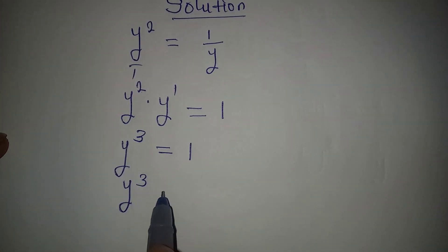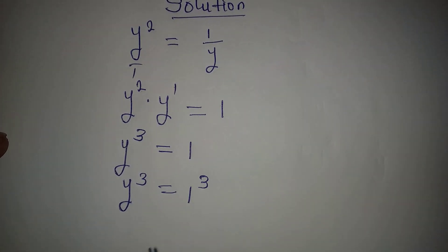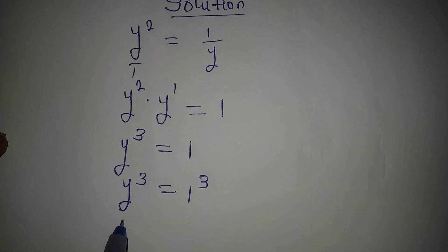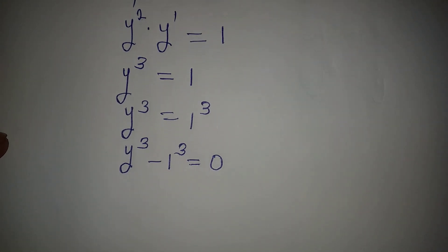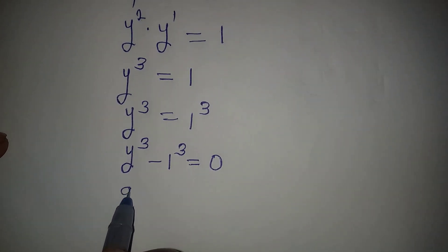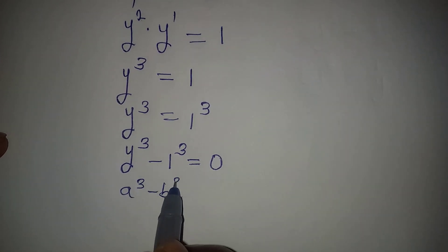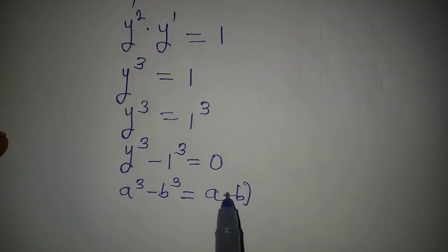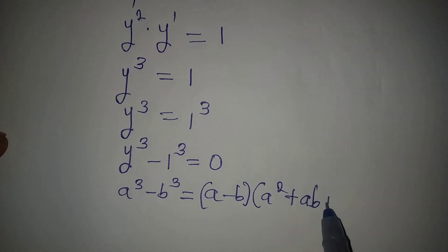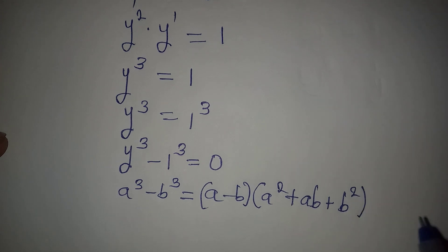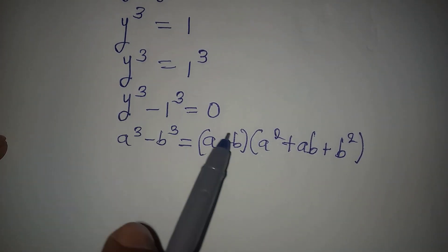So we're going to have y to the power of 3 equal to 1 to the power of 3, which is the same as 1. Now bring this to the left so we have y to the power of 3 minus 1 to the power of 3 equal to 0. From here we apply the standard identity: if you have a to the power of 3 minus b to the power of 3, this is the same as a minus b, multiplied by a squared plus ab plus b squared.